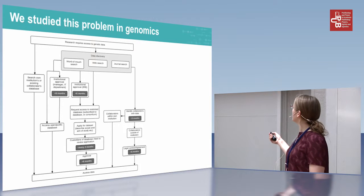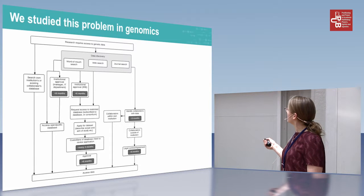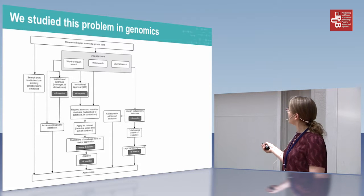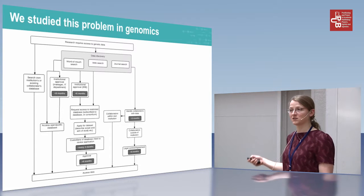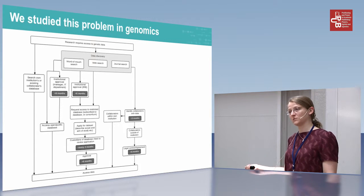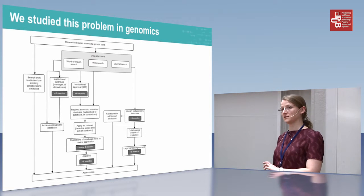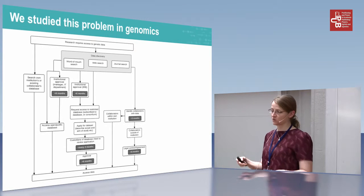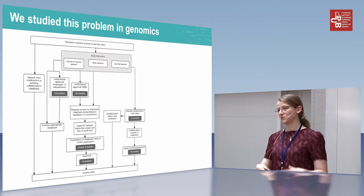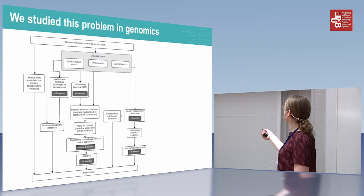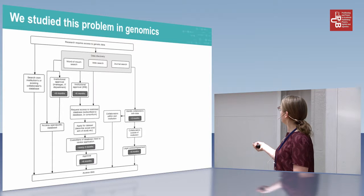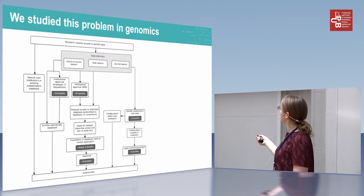After the data discovery part — finding and potentially wanting to access some data — unless it's open access, where you can usually go more or less directly to download it, you would need to go through an approval process. In genomics, the data is usually clinical data that may contain confidential information, so you have to apply for access. You have to go through an application process stating what you want to use the data for, that you'll keep it confidential and secure, and that you'll adhere to the consent given for data usage — a process that can take a long time.